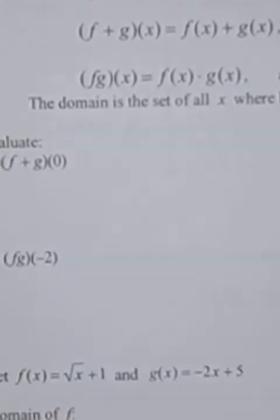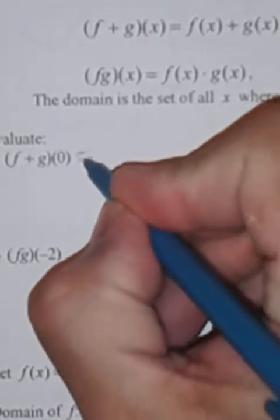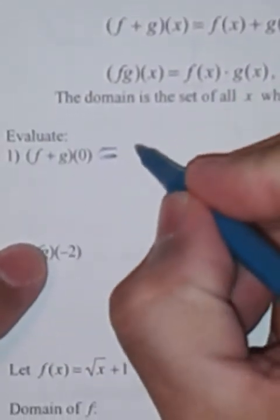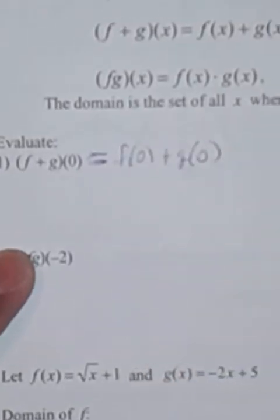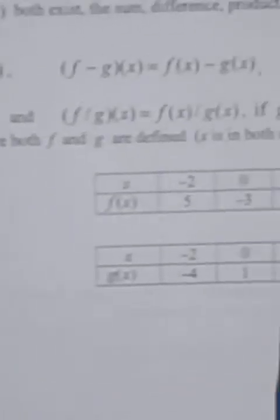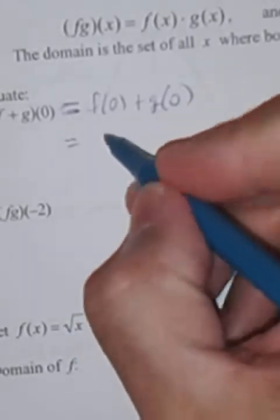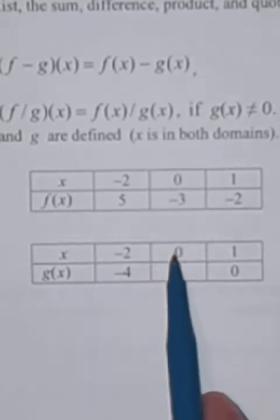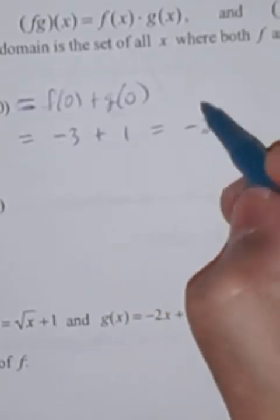All right, let's take a look at how these look. Let's try number one: evaluate f plus g of zero. The first thing we want to do is write it the way we were told. f plus g of zero is f of zero plus g of zero. And then just find each of those. f of zero is negative three — x is zero, y is negative three. And g of zero is one, so that adds up to negative two. And that's our answer.